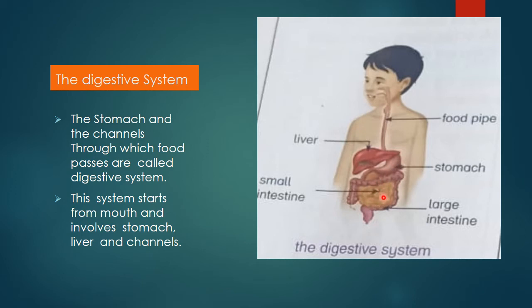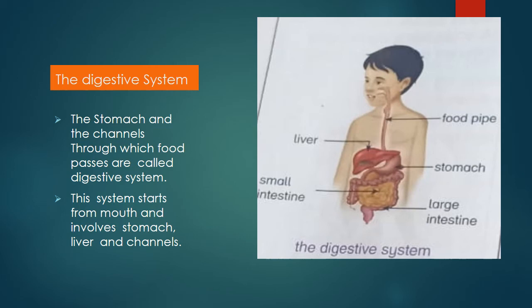The channels are of two types: small intestine and large intestine. Food passes from the mouth to the food pipe, then to the stomach, then to the small intestine, and finally to the large intestine. There is also a helper called the liver — liver helps in the process of digestion, in the breakdown of food. So all these organs — the stomach, its channels, and the liver — together make the digestive system, which is involved in the breakdown of food.